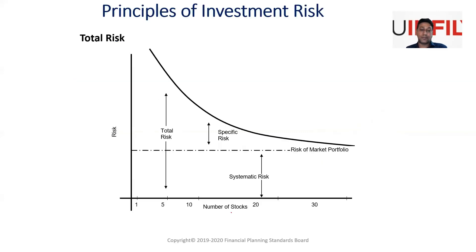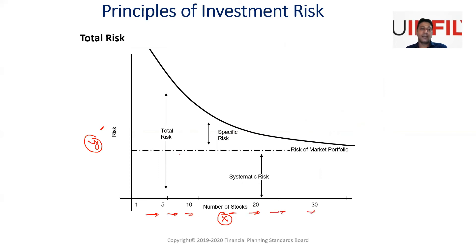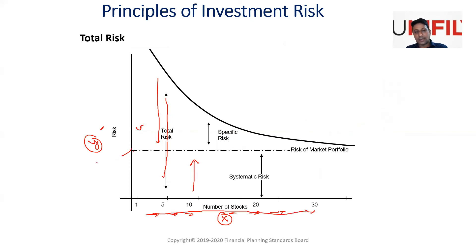Now please pay attention to this chart. On the X-axis you have the number of stocks, and on the Y-axis you have risk. As you increase the number of stocks, the chart shows two areas: the systematic risk area and the unsystematic risk area, together forming total risk. The key message is that even as you increase the number of stocks, the systematic risk line remains flat and static.